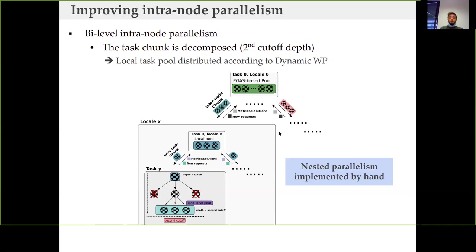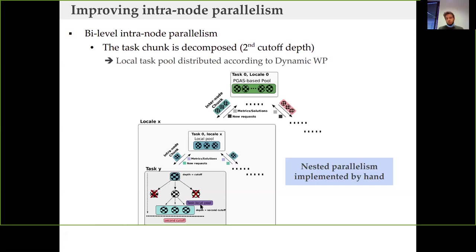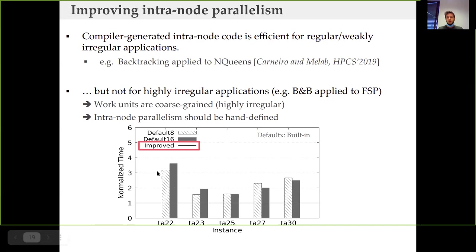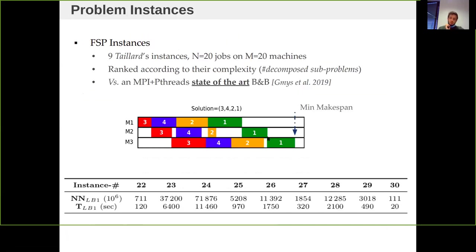We had to improve how we use intra-node parallelism. Instead of relying solely on the iterator, for each node of the chunk we perform a second generation of partial search, generating an intra-locale pool. After generating this pool via a second partial search, we apply the intra-node iterator to use all CPU cores. By doing this nested search, we can get almost four times more performance — our branch-and-bound is now much more efficient and uses intra-locale resources much more efficiently.